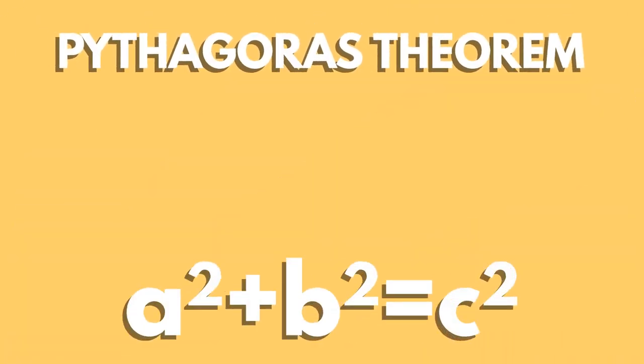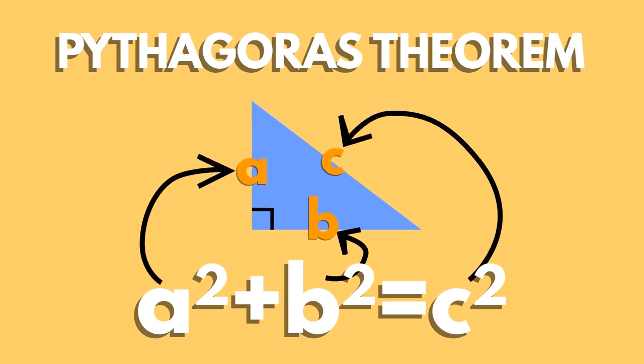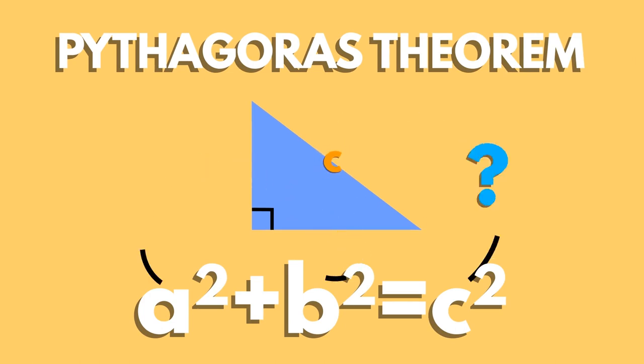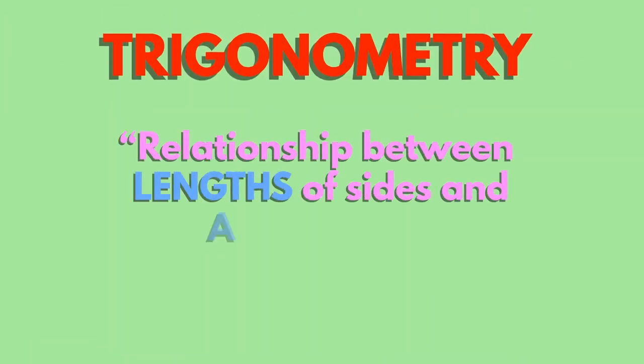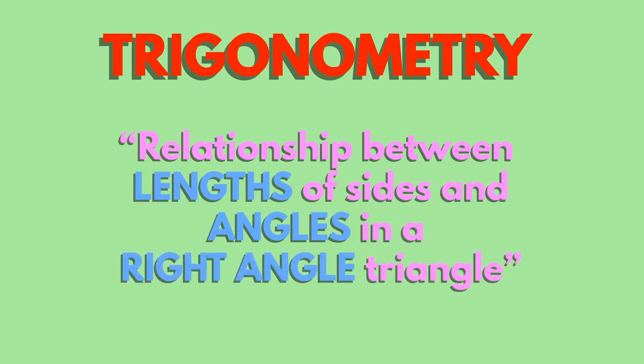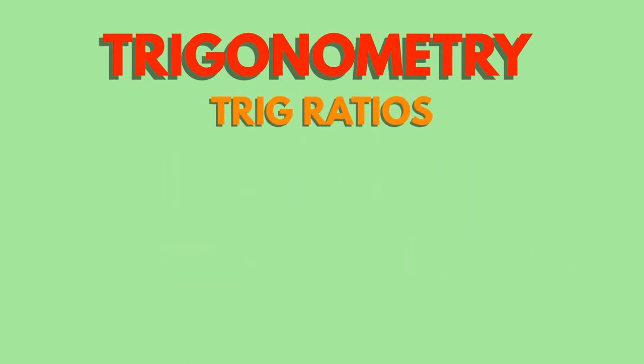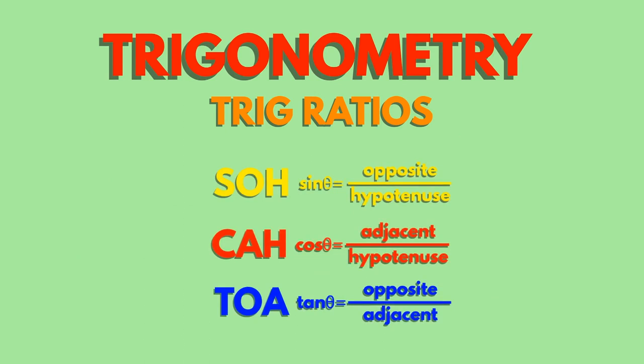Pythagoras' theorem is the relationship between lengths of sides of a right-angled triangle. But what if we only know the length of one of the sides? This is where we need trigonometry. This is the relationship between the lengths of sides and angles in a right-angled triangle. There are handy rules called trig ratios that help us find the values we need.